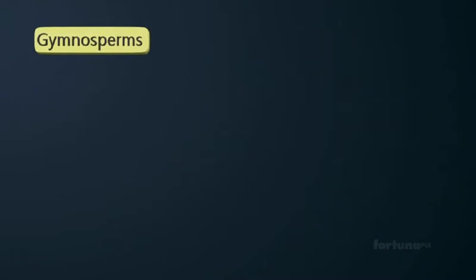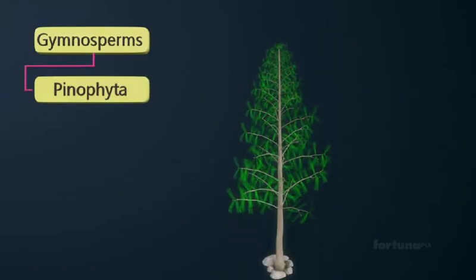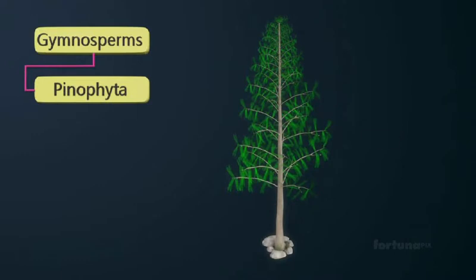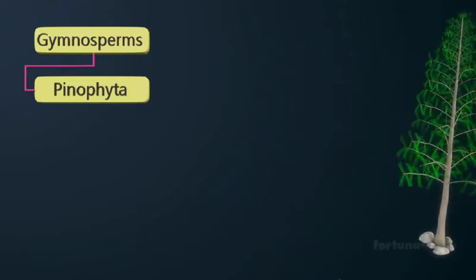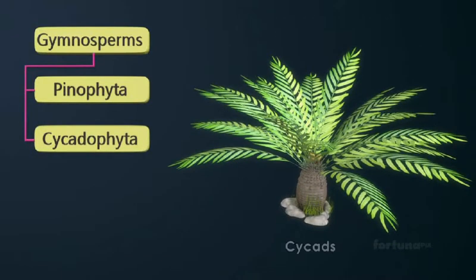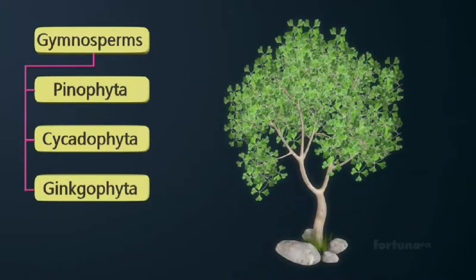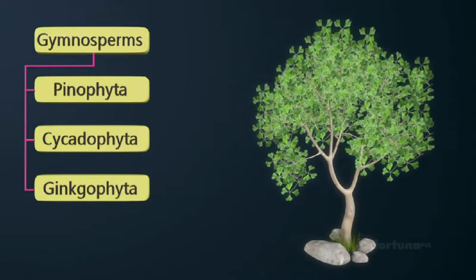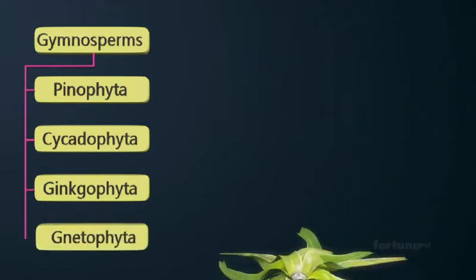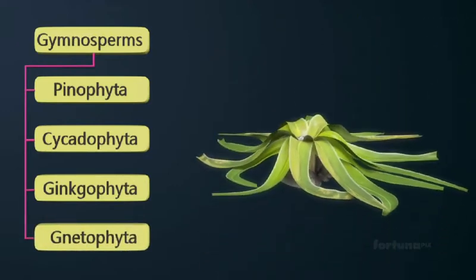Gymnospermae can be further broken down into Division Pinophyta, which includes pines; Division Cycadophyta, which includes cycads; Division Ginkgophyta, which includes the Ginkgo; and Division Gnetophyta, which includes the Welwitschia.